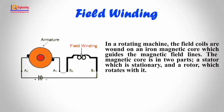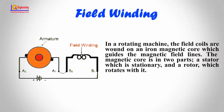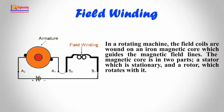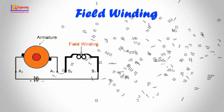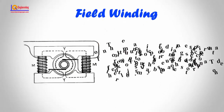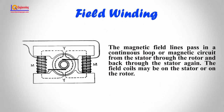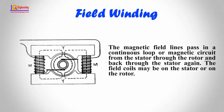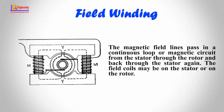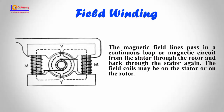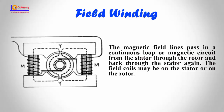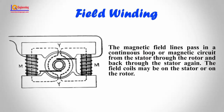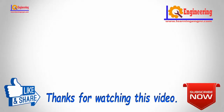The magnetic core is in two parts: a stator which is stationary, and a rotor which rotates within it. The magnetic field lines pass in a continuous loop or magnetic circuit from the stator through the rotor and back through the stator again. The field coils may be on the stator or on the rotor.